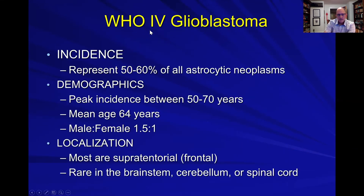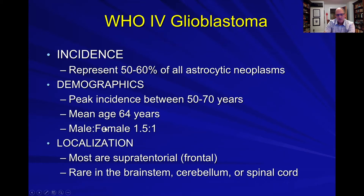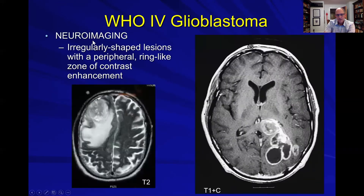Here's an example of grade 4 — glioblastoma. As the pie chart showed, these are the most common astrocytic tumors. Peak incidence is in the older population; the average age is about 64. They are a little bit more common in men, and more common supratentorially, especially in the frontal lobes. On imaging, these look similar to the grade 3 tumors, but there are signs suggesting more aggressive behavior.